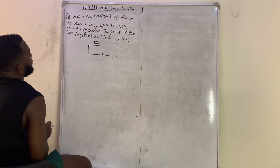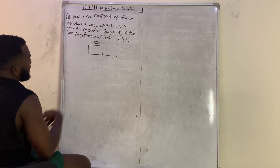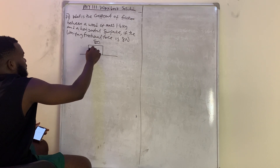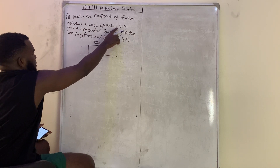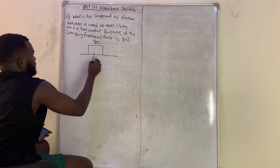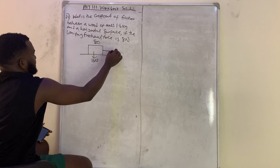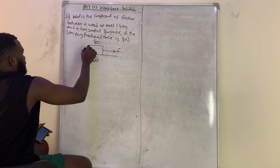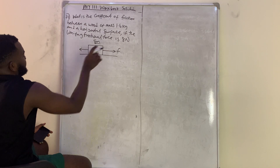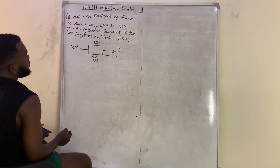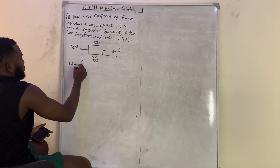For the solution, you can draw a diagram. The mass of the substance acts downward, so the weight is 1.6 times 10, which equals 16 Newtons. If a body applies a force, the frictional force acts in the opposite direction, so the frictional force here is 8 Newtons.